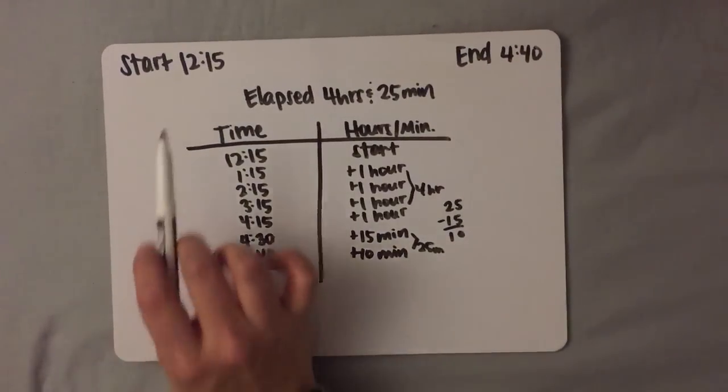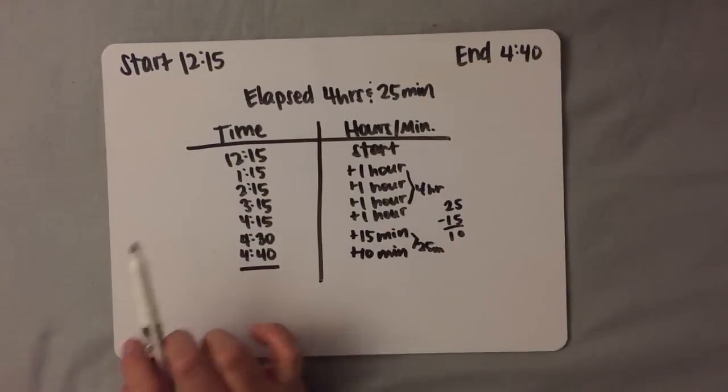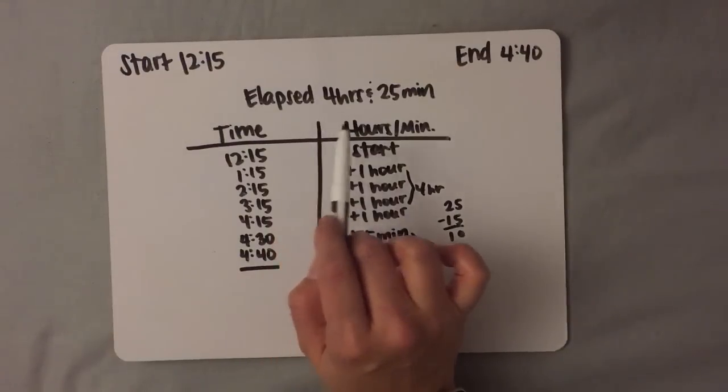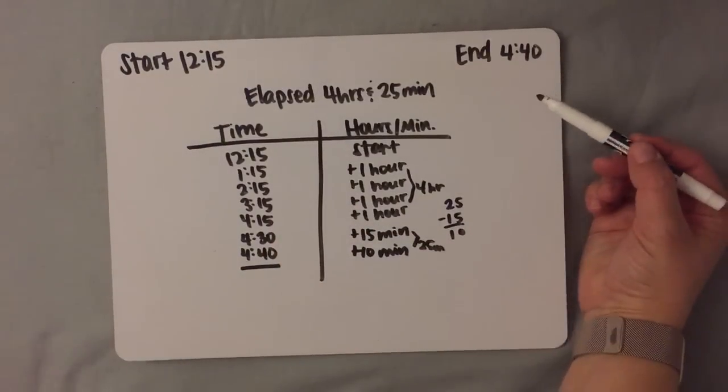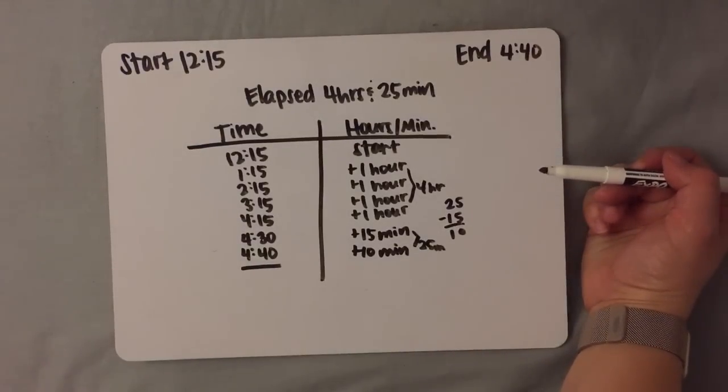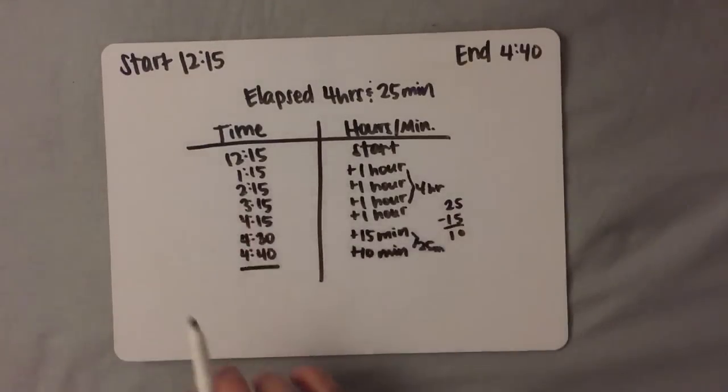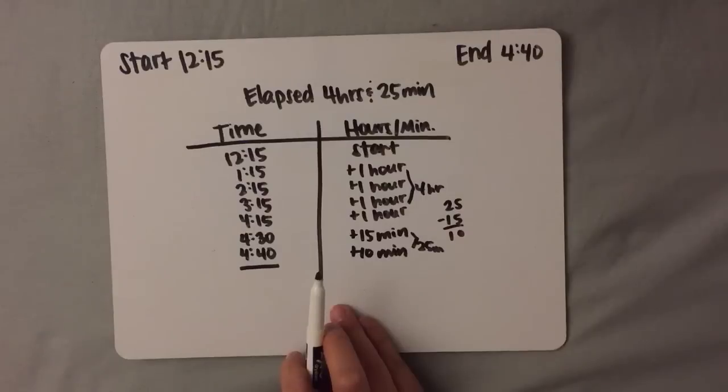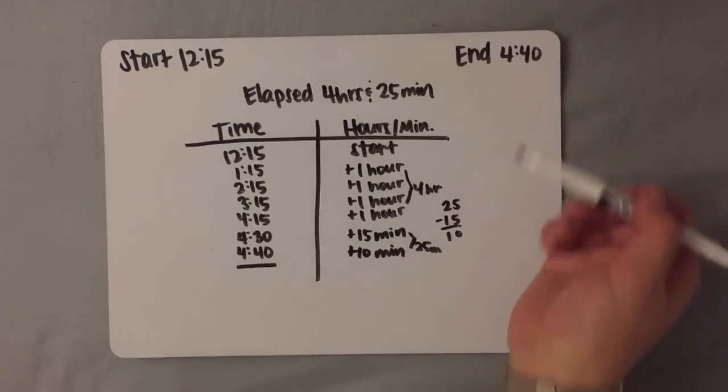So, given a start time of 12:15 and an elapsed time of 4 hours and 25 minutes, my end time is 4:40. For example, maybe I go to Busch Gardens at 12:15, and I spend 4 hours and 25 minutes hanging out there, going on roller coasters and having a great time. That means that I'm going to leave at 4:40.